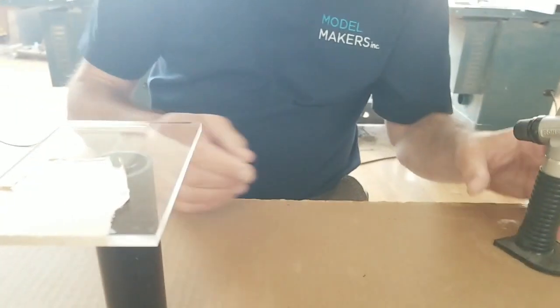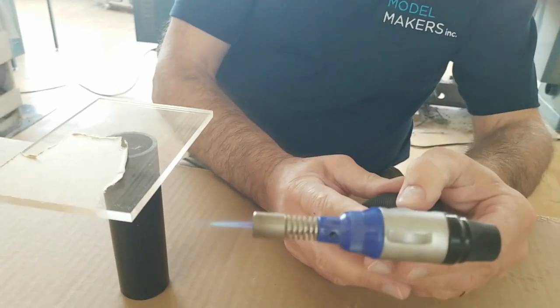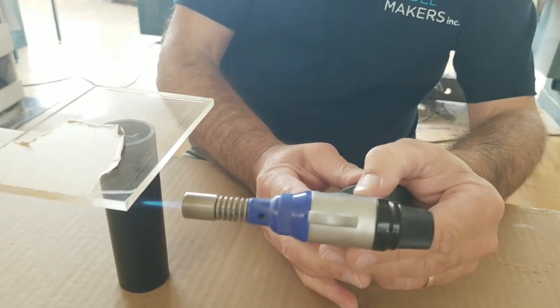You want an even feed rate. We're going to do the edge that has the joiner finish.